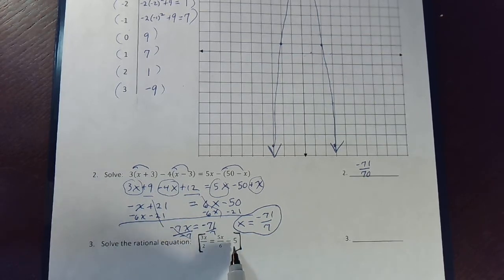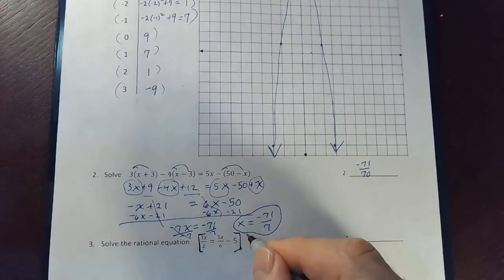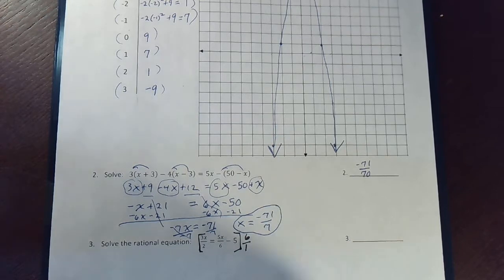And, well, this negative 5 is like minus 5 over 1, so we don't need to worry about that. We have a 2 here and a 6 here. So the LCD, the least common denominator, is going to be 6. So I'm going to multiply it by 6, or 6 over 1. All three terms.